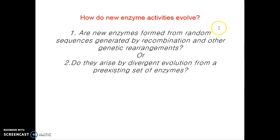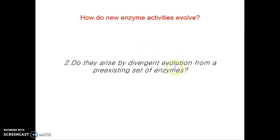The next question will be: how do new enzyme activities evolve or be produced? There are two possibilities. First, are new enzymes formed from random sequences generated by recombination and other genetic rearrangement? Or do they arise by divergent evolution from a pre-existing set of enzymes? The second one has strong evidence.